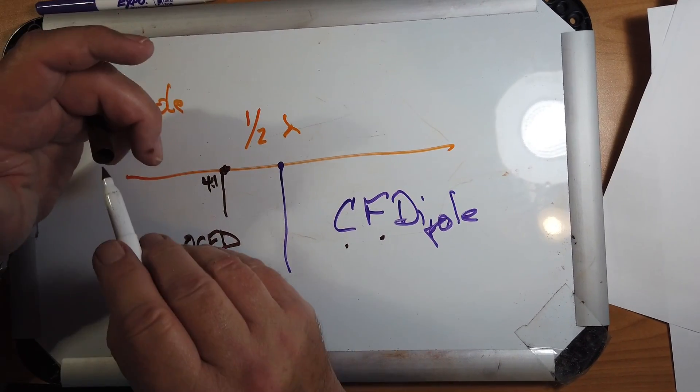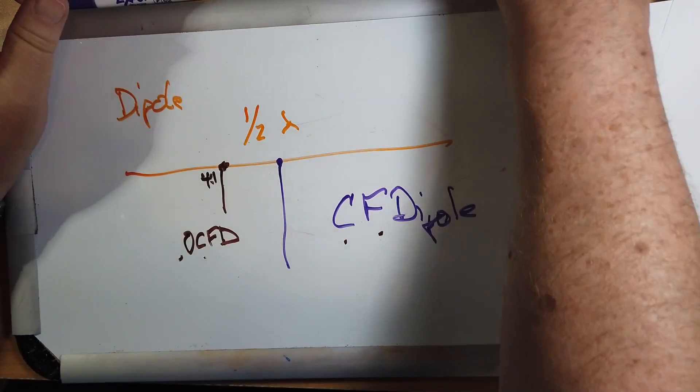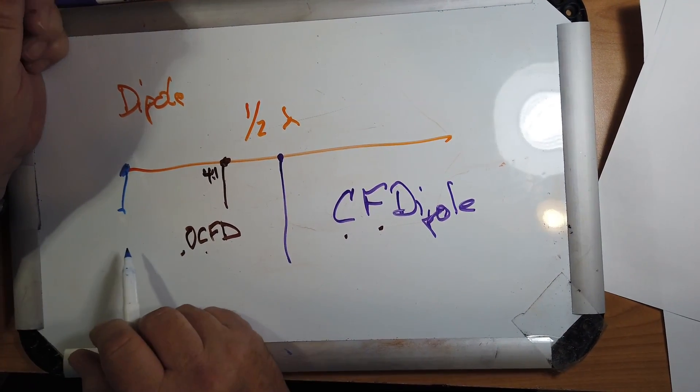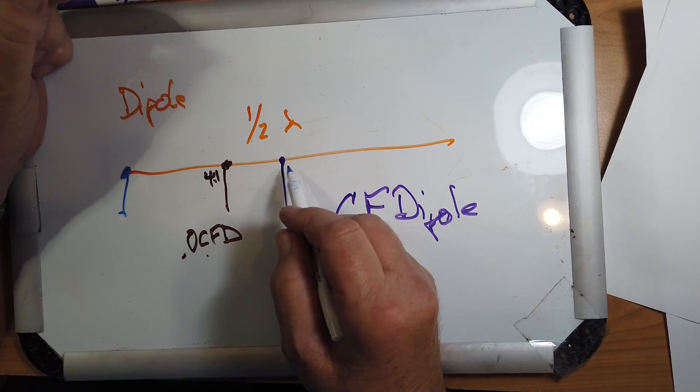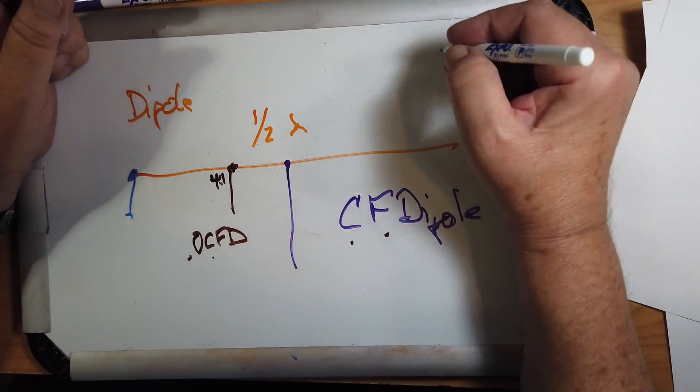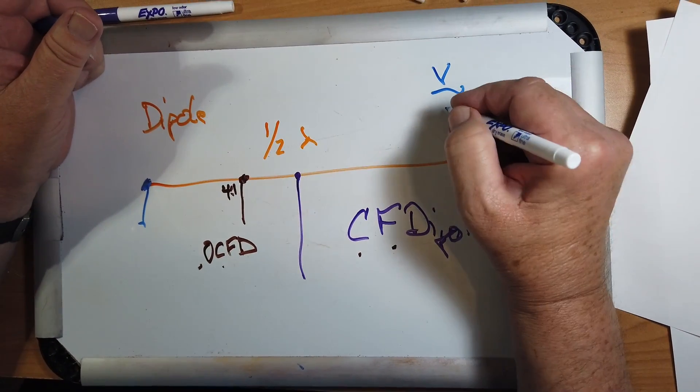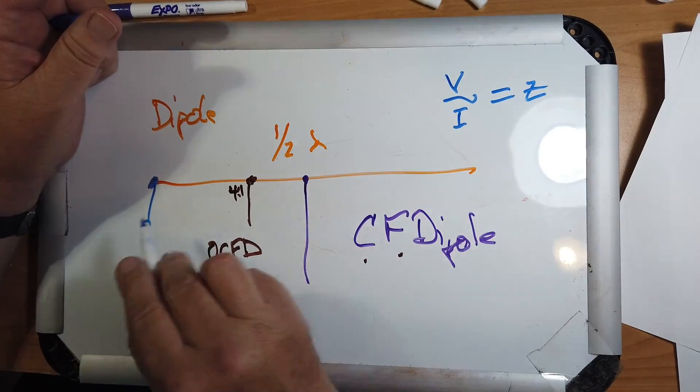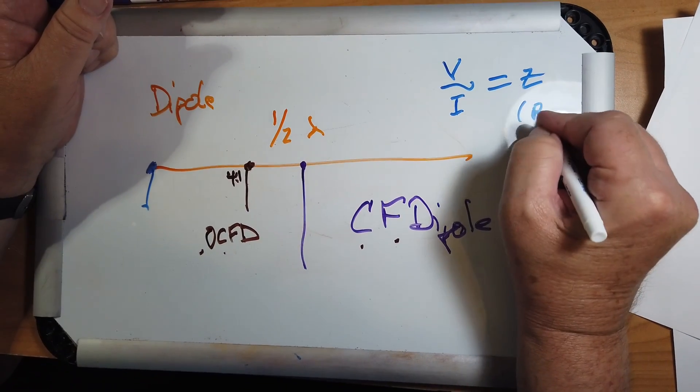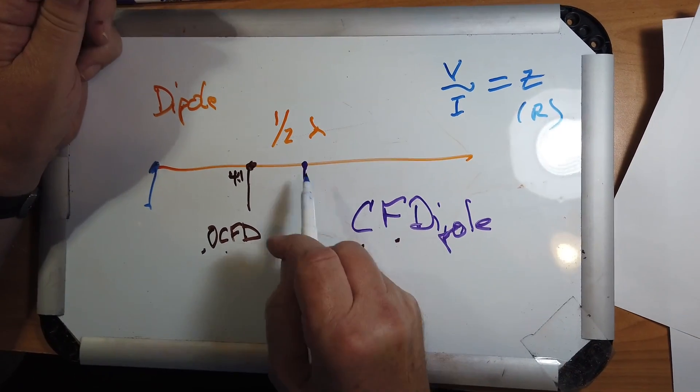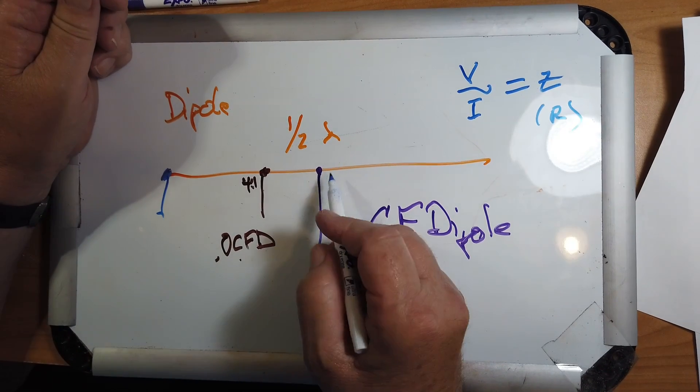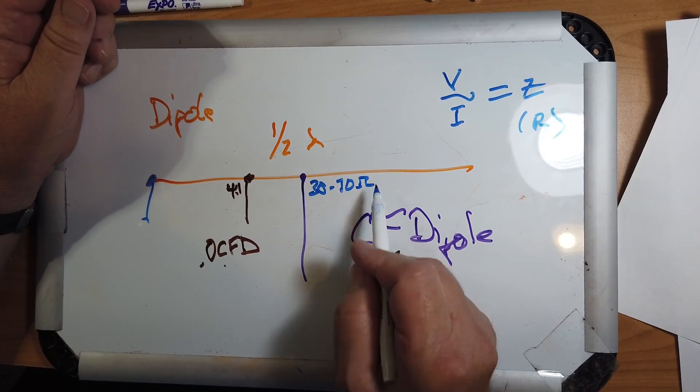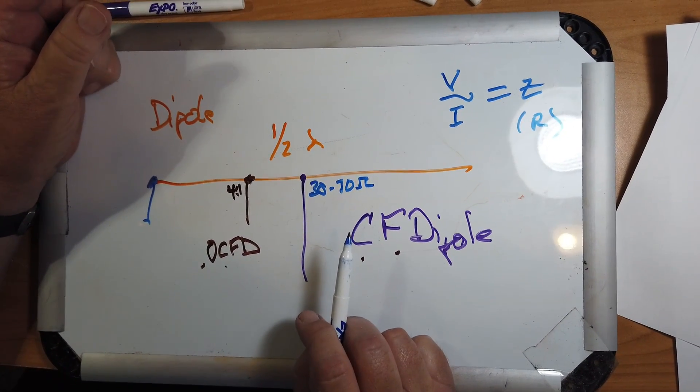And of course, the other method that has become extremely popular of late is feeding it at the end. Now, the impedance of a dipole, meaning the ratio of the voltage to the current is the impedance at any given point. This is R, think R from Ohm's Law. It's lowest here. It ranges from 30 to 70 ohms, depending on how high above the ground it is.